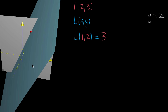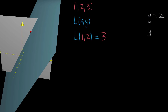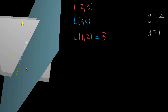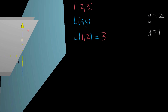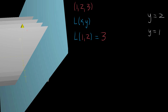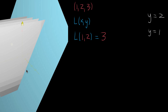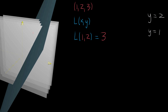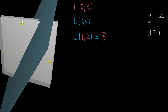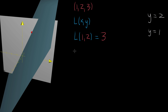The slope is also constant if you move in the y direction. If instead I had chosen y equals one, you get a line with the same slope. No matter what constant value of y you choose, it's always intersecting that plane with a line that has the same slope. Looking back to partial derivatives, this tells us that when we take the partial derivative of L with respect to x — because constant y means you're moving in the x direction — this should just be some constant A.